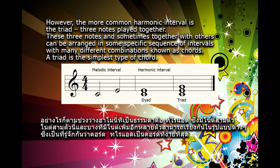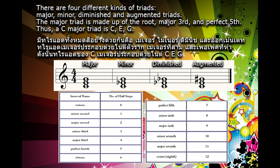A triad is the simplest type of chord. There are four different kinds of triads: major, minor, diminished, and augmented triads.